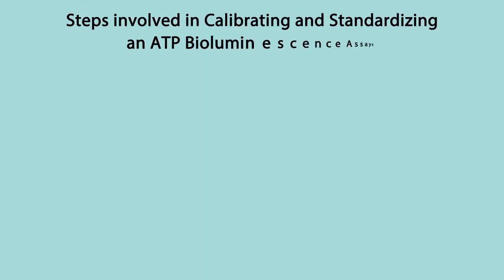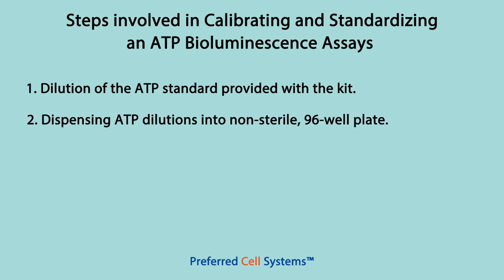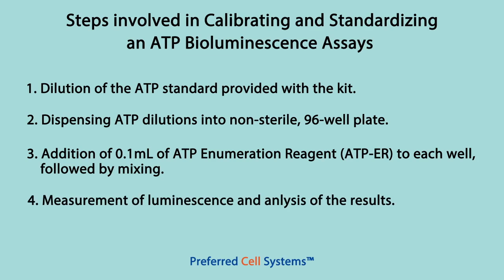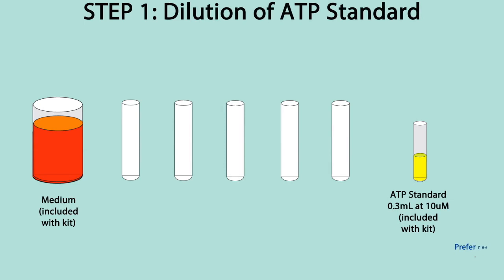There are four individual steps to calibrating and standardizing an ATP bioluminescence assay. First, dilution of the ATP standard provided with the kit. Second, dispensing each of the ATP dilutions into the 96-well plate provided, and also dispensing the low and high controls after the ATP dilutions. Third, addition of 0.1ml of the ATP enumeration reagent to each well, followed by mixing. And finally, measurement of bioluminescence in the luminescence plate reader and analysis of the results. Let's now go to step one of the protocol: dilution of the ATP standard.